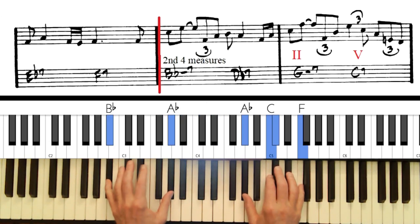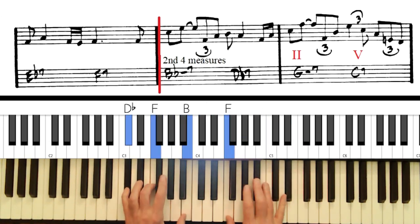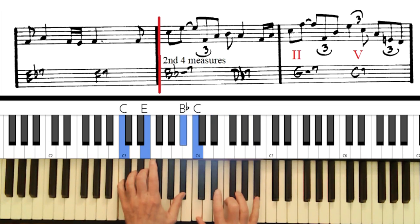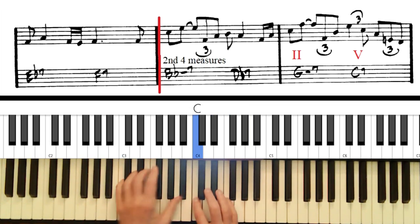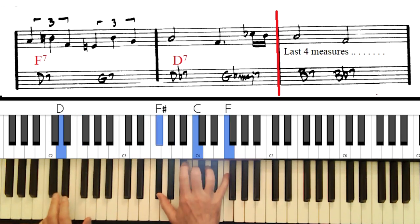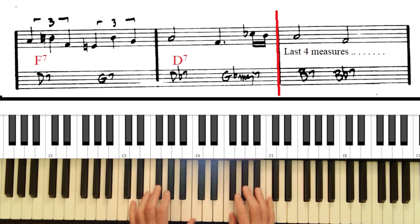So we're starting on B-flat minor. And then we've got a 2-5-1, well, 2-5. Now, typically on the blues, you would expect F7 here, and then maybe a D7 on the next measure, where that D-flat 7 is. So just kind of feeling it that way.